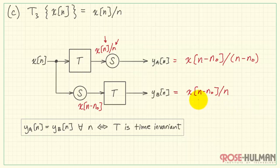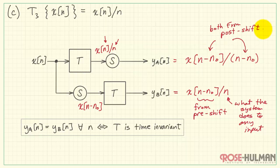Let's reflect for a moment on the structure of these two equations. Here, n minus n0 is from the pre-shift operation, dividing by n. That's what the system does to any input. Up here, we have a subtraction of n0 from each of these expressions involving n, because they are both from the post-shift.